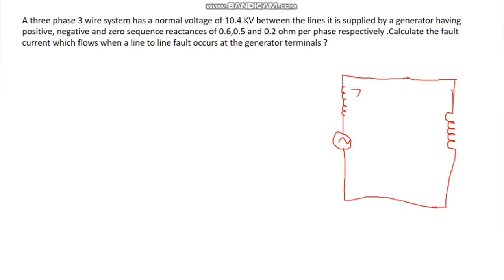In the equivalent circuit, Z1 is the positive sequence reactance and Z2 is the negative sequence reactance. These are series-connected. Ia1 is the positive sequence current and Ia2 is the negative sequence current, which flows in the opposite direction. Since they form a series path, Ia1 is equal to minus Ia2.